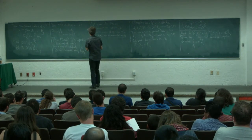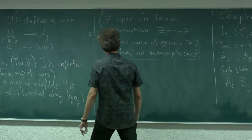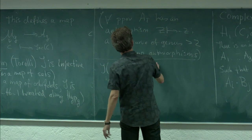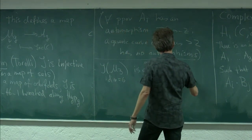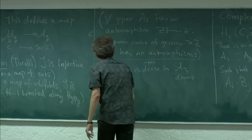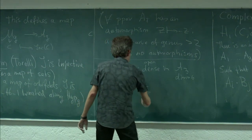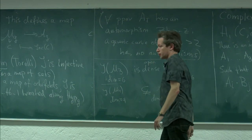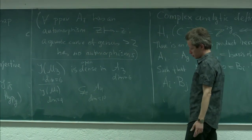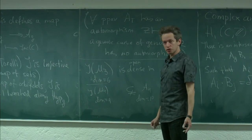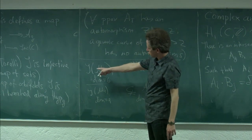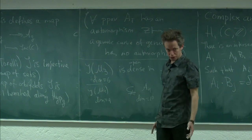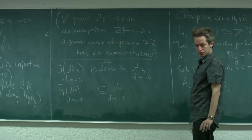One last remark: the image of M_3 in A_3 is six-dimensional and open dense in A_3, which also has dimension six. But the Jacobians of genus 4 curves have dimension nine, and A_4 has dimension ten, so not every abelian variety is a Jacobian. This tells you that there are really three different spaces to study separately: hyperelliptic curves, curves, and principally polarized abelian varieties.